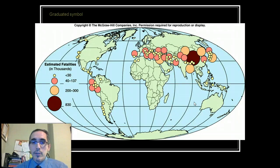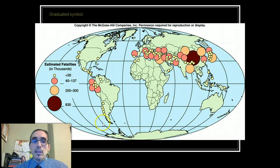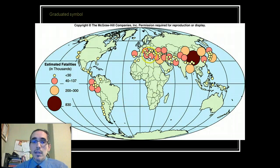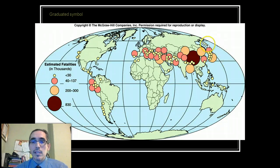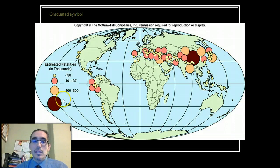Another type of graduated symbol map shows earthquakes that have happened around the world over the last 200 years. The larger the circle, the more people died from that particular earthquake. We see that a lot of those earthquakes happened through the Middle East, in Asia, and particularly along the Pacific Rim, although it's hard to tell because the map projection splits the Pacific Ocean in two. The point is to communicate both the magnitude differences and the distribution of those earthquakes.